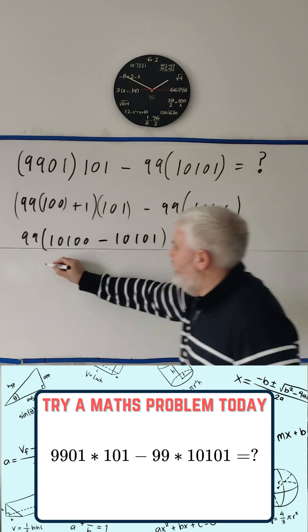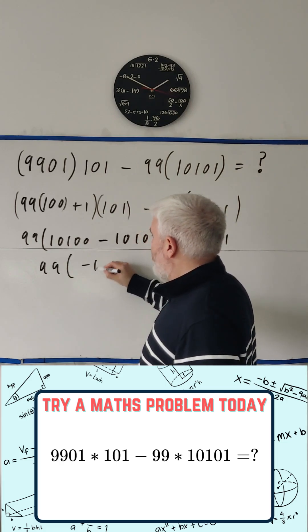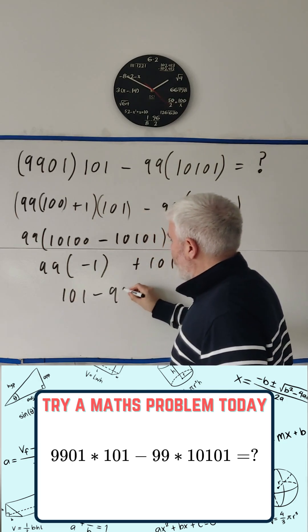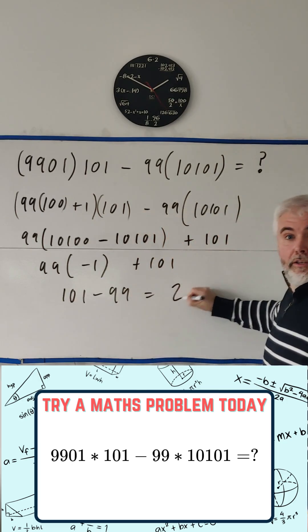We can do this one in our heads. This is 99 multiplied by minus 1 plus 101. That's 101 minus 99, which is equal to 2.